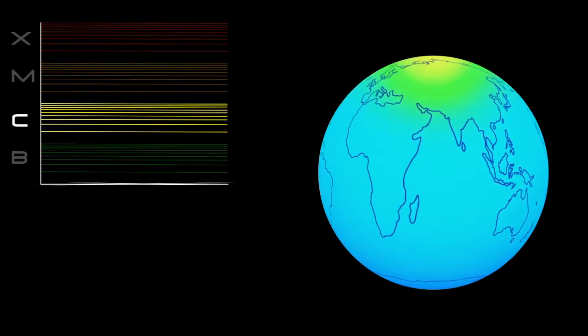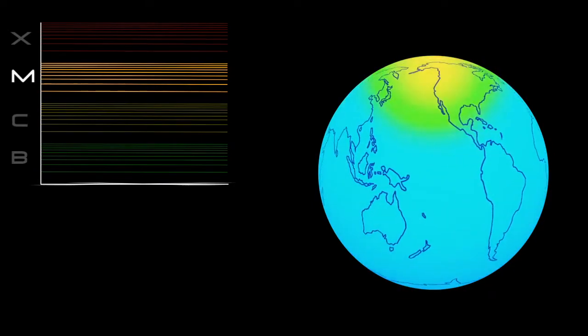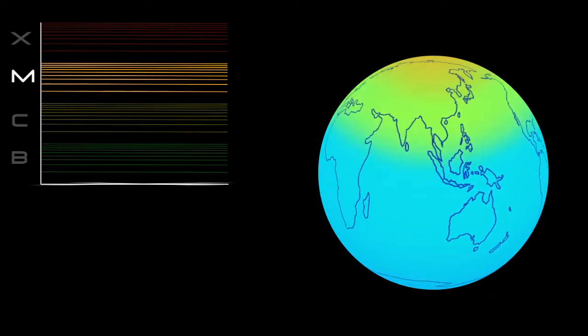C-class flares are too weak to noticeably affect Earth. M-class flares can cause brief radio blackouts at the poles, and minor radiation storms that might endanger astronauts.